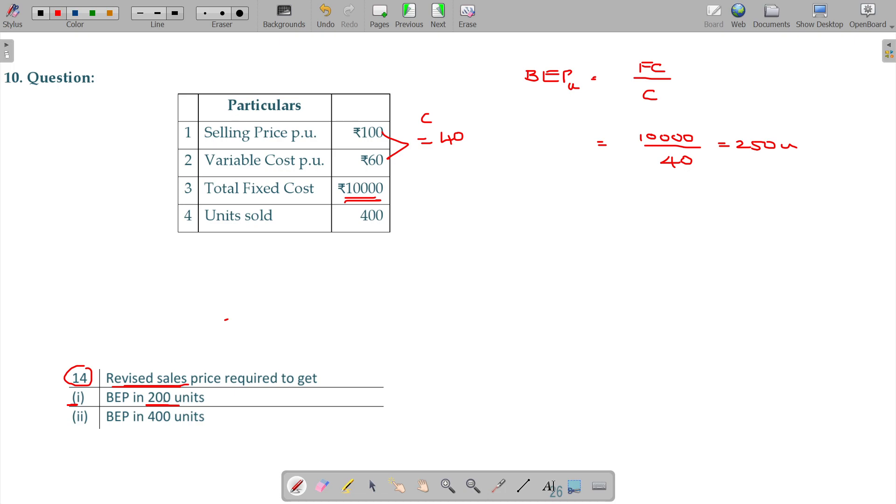You have to extend your preparation the same way you can extend your sale price. In the BEP formula, substitute the contribution. Contribution equals sales minus variable cost.